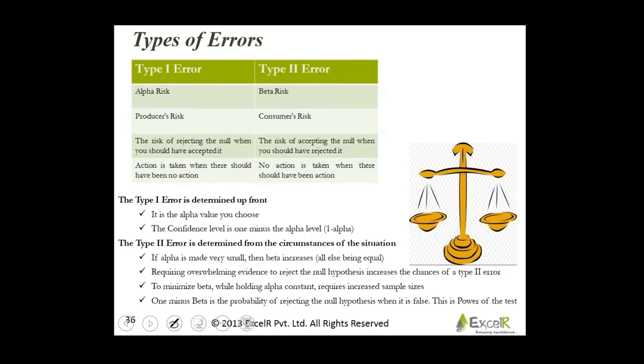Now you will have to balance that out. Type 1 error is determined upfront by your management. Or you pick up that value called 5%. It is called as alpha value you have chosen. 1 minus alpha will give you the confidence level. If I am saying there is a 5% chance that you might go wrong, I am okay with that as a management person. Then 1 minus alpha which is 5% is 95%. And this is called as my confidence level. Type 2 error is determined from the circumstances of the situation. If the alpha is made very small, then the beta risk increases. That is acceptable in most cases.